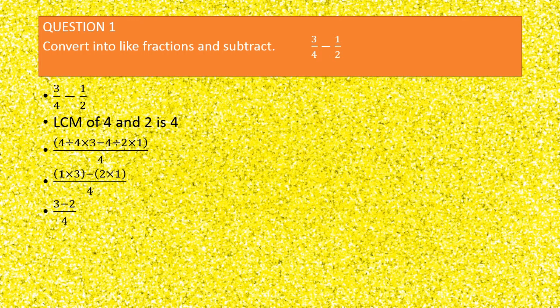On solving, we get 3 minus 2 as the numerator and 4 as the denominator. So the answer comes out to be 1/4, which cannot be further simplified. This is the fraction we got on subtracting 3/4 and 1/2.